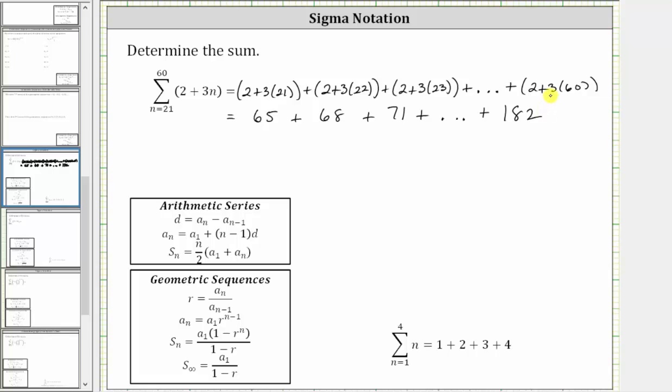So if we didn't recognize it before we should now recognize we do have an arithmetic series because the terms are increasing by three. So let's make a note the first term a sub one is 65 and the common difference d is positive three.